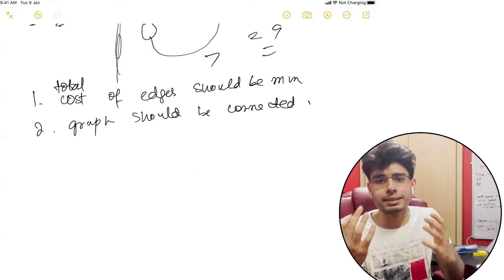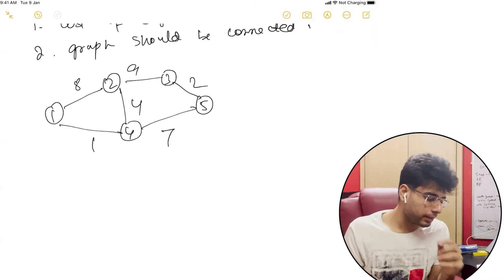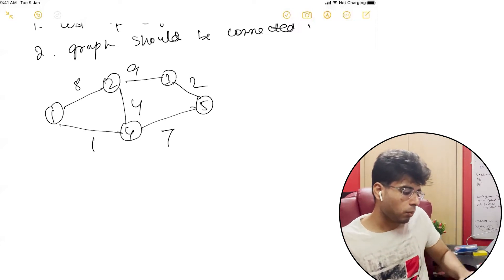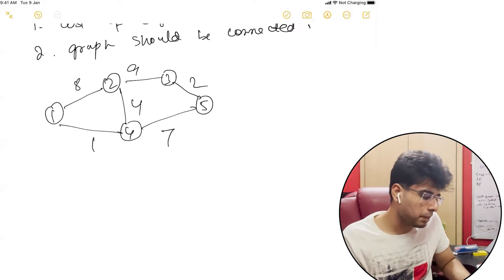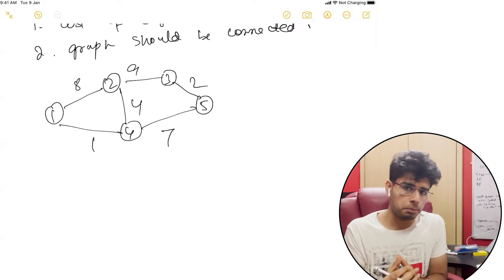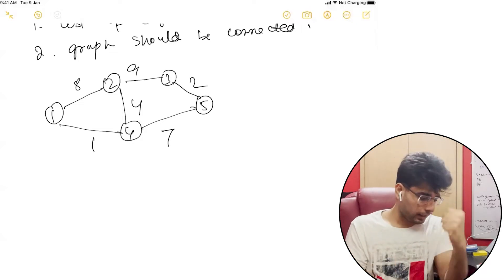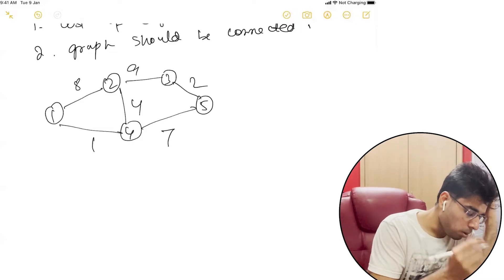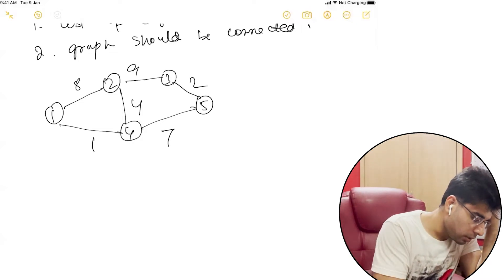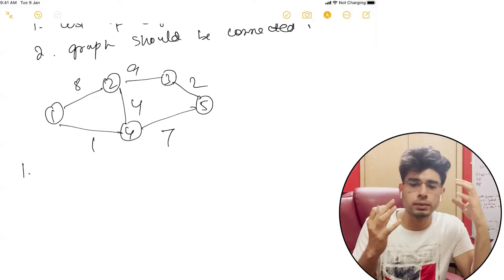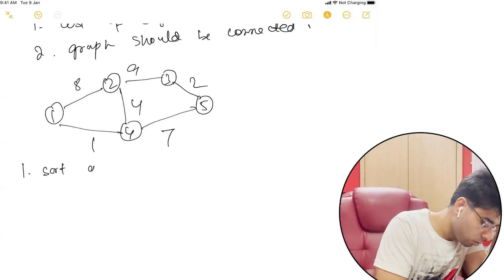Let's take an example and understand. This is the graph, and we want to find a minimum spanning tree such that the cost is minimum and the graph is connected. The first thing we want to do is sort all the edges according to their weight.